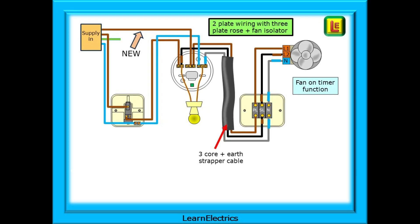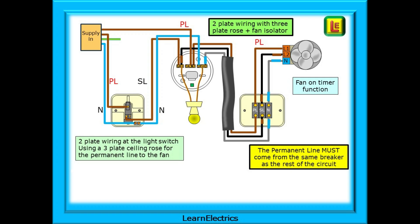In this example we've run a new PL wire from the circuit breaker to the ceiling rose. Now using three core strapper cable we can run a permanent line, switched line and neutral to the isolator switch and then to the fan. An important point here. The new permanent line conductor must come from the same circuit breaker as the rest of the circuit. We must not borrow a permanent line from a convenient supply nearby. That is bad practice and may lead to harm.